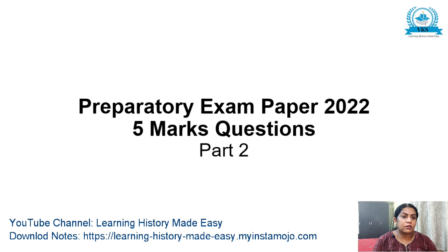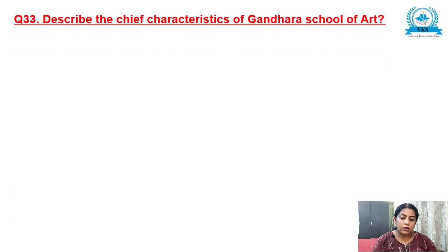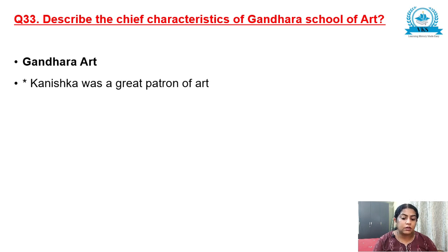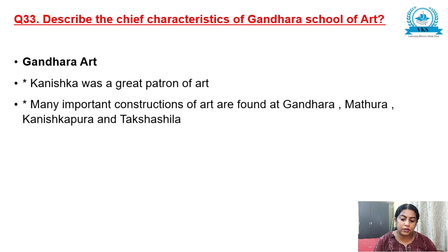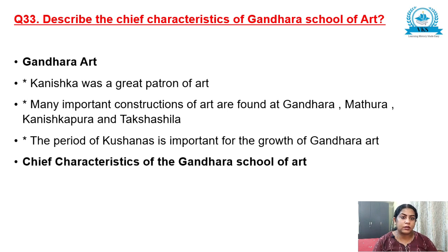Today's video I will be explaining three or four questions, with five more to be continued in the next video. The next question is: describe the chief characteristics of Gandhara School of Art. As an introduction, you can write: Kanishka was a great patron of art. Many important constructions of art are found at Gandhara, Mathura, Kanishkapura and Takshashila. The period of Kushanas is important for the growth of Gandhara Art. A small 2 or 3 sentence introduction will be enough, then go on to the answer.